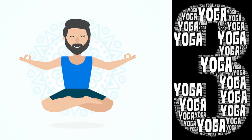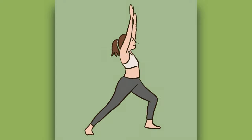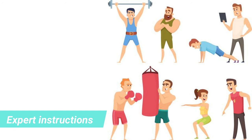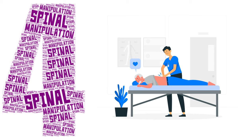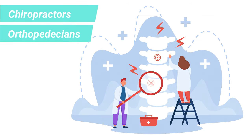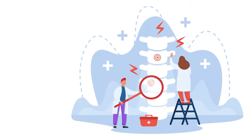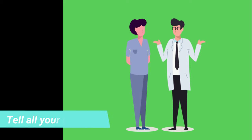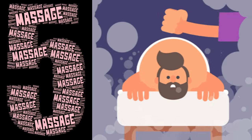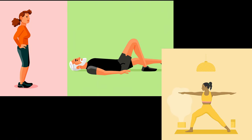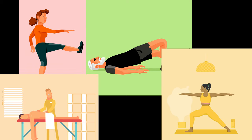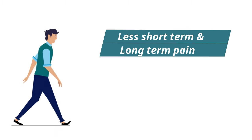Third is yoga. If your back pain doesn't go away in three months, you may try yoga as well. Make sure you get expert instructions so you don't hurt yourself doing yoga improperly. Fourth is spinal manipulation. Chiropractors and some orthopedic surgeons may try to move the joints of your spine to treat lower back pain. This treatment is not appropriate for everyone, so tell your provider about all your symptoms and health issues. Fifth is massage. Massage may relieve chronic low back pain, especially when combined with exercise and stretching. Patients who did all three — exercise, stretching and massage — were able to move around easier and had less short-term and long-term pain.